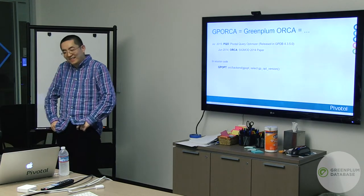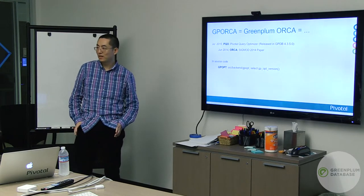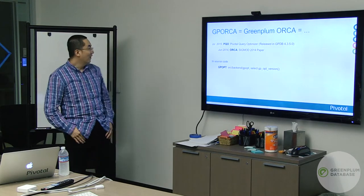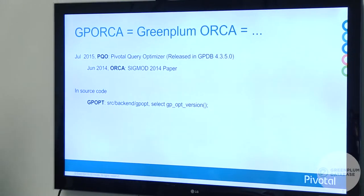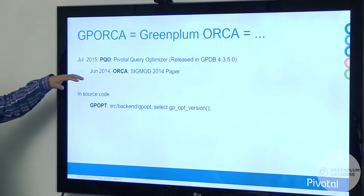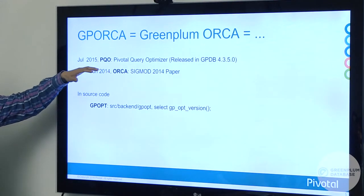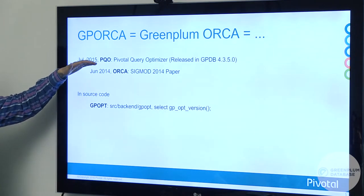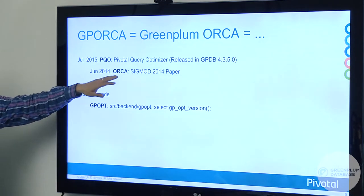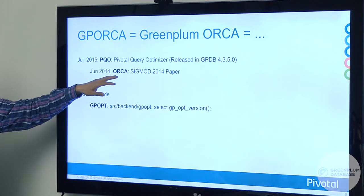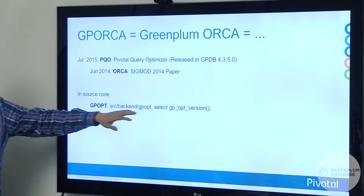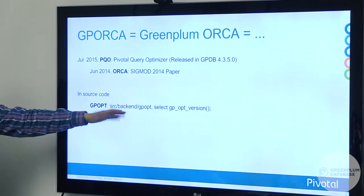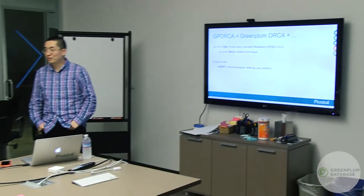What is GPIOC? It actually stands for GreenPlum ORCA. ORCA is basically just a name for this query optimizer and we've given it multiple different names. In July 2015, when we released GPDB 4.3, we called it Pivotal Query Optimizer, PQO. In the paper, we called it ORCA in SIGMOD 2014. In the code, you'll see GPOPT everywhere — GP_OPT, and the folder GPOPT — all referring to the same query optimizer, because we couldn't trademark it.